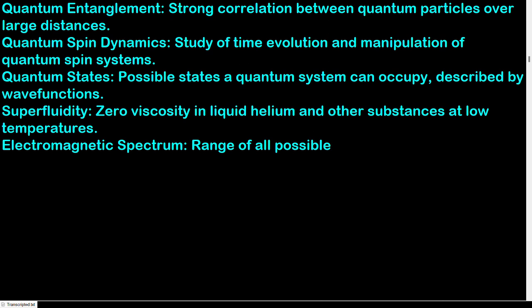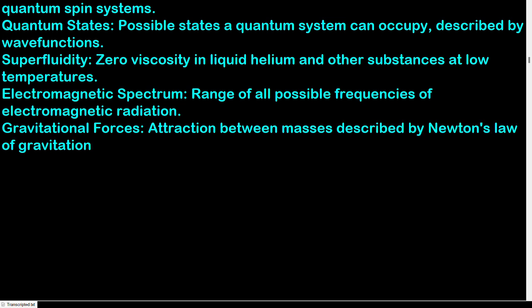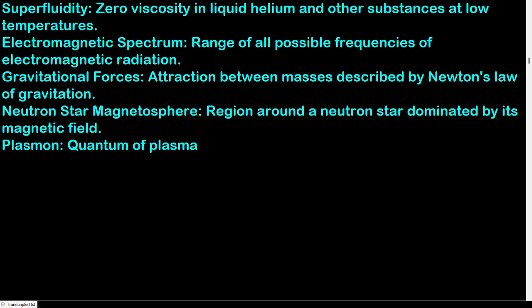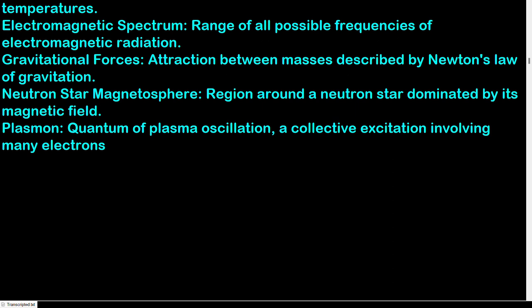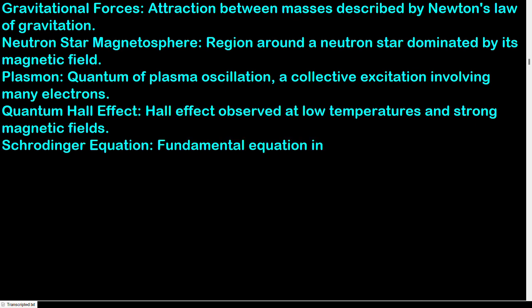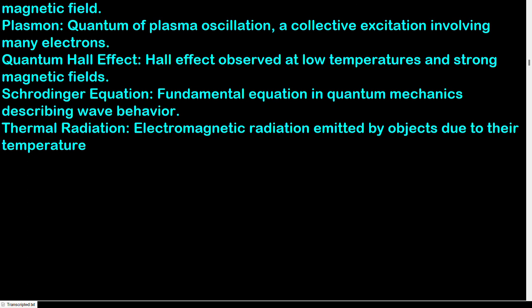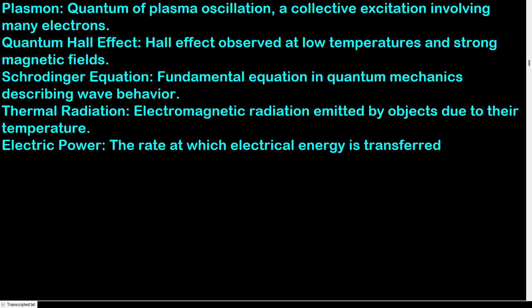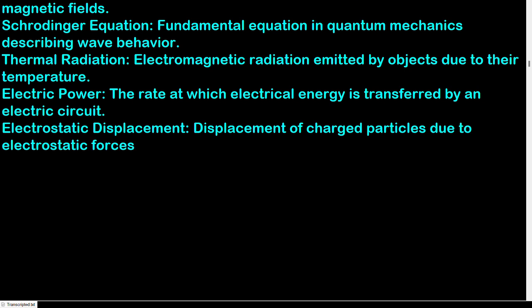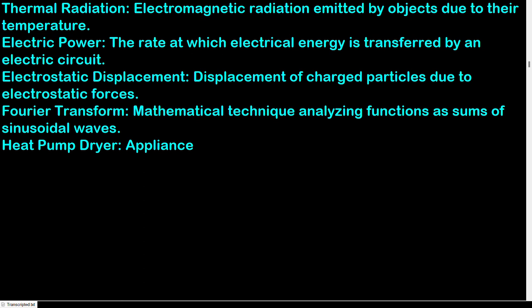Electromagnetic spectrum: range of all possible frequencies of electromagnetic radiation. Gravitational forces: attraction between masses described by Newton's law of gravitation. Neutron star magnetosphere: region around a neutron star dominated by its magnetic field. Plasmon: quantum of plasma oscillation, a collective excitation involving many electrons. Quantum Hall effect: effect observed at low temperatures and strong magnetic fields. Schrödinger equation: fundamental equation in quantum mechanics describing wave behavior. Thermal radiation: electromagnetic radiation emitted by objects due to their temperature. Electric power: the rate at which electrical energy is transferred by an electric circuit. Electrostatic displacement: displacement of charged particles due to electrostatic forces.